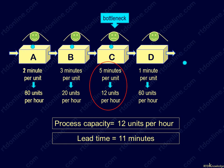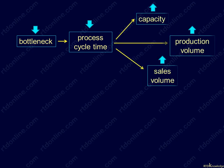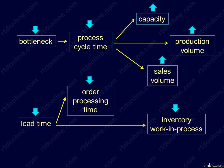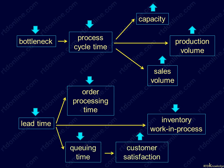One practical insight we get from this lesson is: in general, to increase capacity, production volume, or sales, just reduce the cycle time of the process by reducing the bottleneck. While to reduce order processing time or to cut inventories and work in process, cut lead time. You also cut lead time to reduce queuing time of customers inside service factories, thereby improving customer satisfaction.